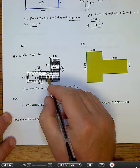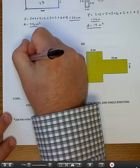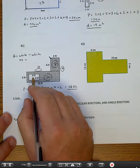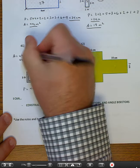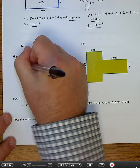36 plus 8, 44. But then I have to subtract the area of the white box because that's not shaded. 3 times 2 is 6. So 44 minus 6 is 38 feet squared.